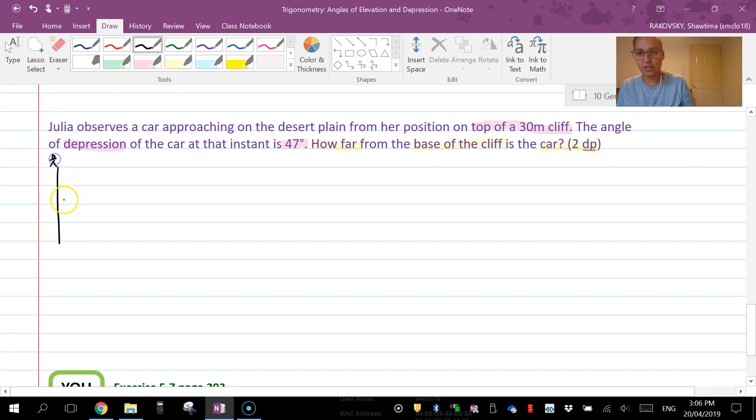Julia is on top of a 30 meter cliff and we're always going to make the assumption that the cliff is 90 degrees to the ground that the car is traveling on. So the car is here.